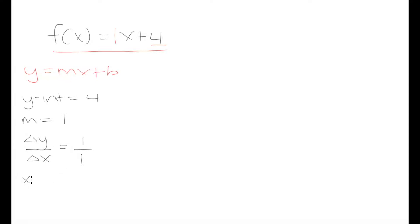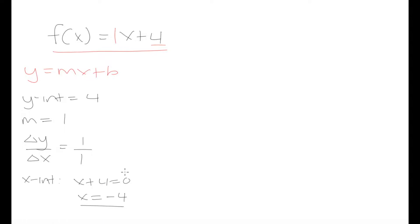To find our x-intercept, we set the entire function equal to 0. So we set x plus 4 equal to 0, which means x is equal to negative 4 — that is our x-intercept. So we already have three key pieces of information about our function: our y-intercept, our slope, and our x-intercept, and we can draw our graph using just these three pieces.